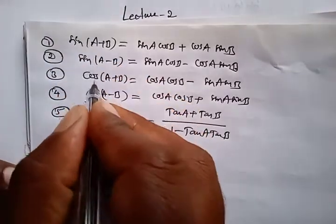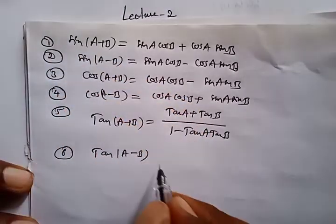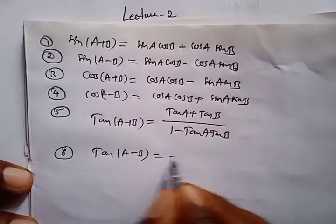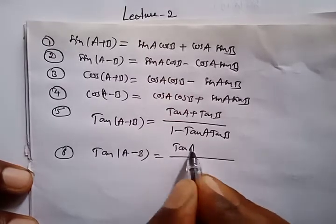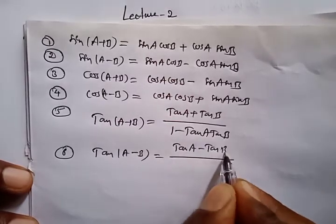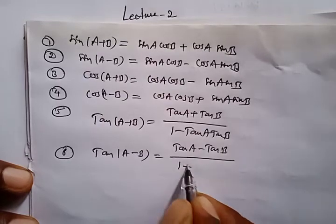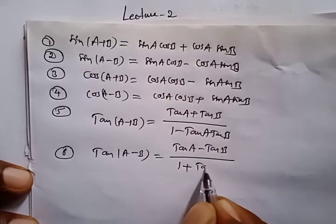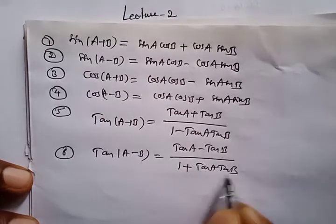The sixth formula is tan(A-B) = (tanA - tanB) / (1 + tanA·tanB).